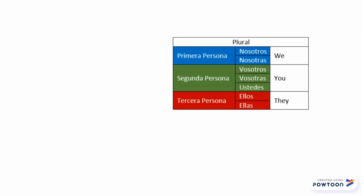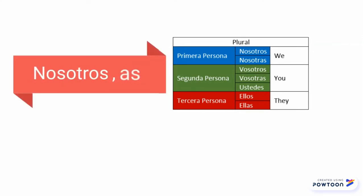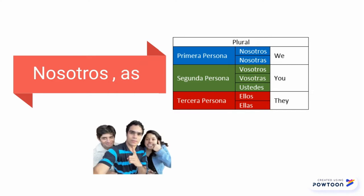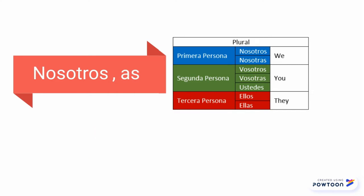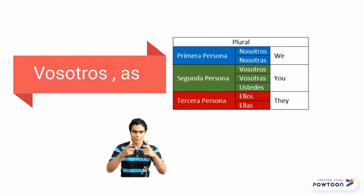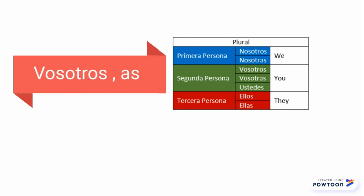Now let's see the plural forms. The first person plural is represented by nosotros — for a group of boys or boys and girls — and nosotras for only girls. The second person plural is represented either by vosotros or ustedes. Vosotros for a group of boys or boys and girls, vosotras for girls only. Ustedes is evidently the plural for the singular pronoun usted — that means that's the plural formal form. Nevertheless, in Latin American Spanish, it is employed in any situation since the pronoun vosotros is never used there.